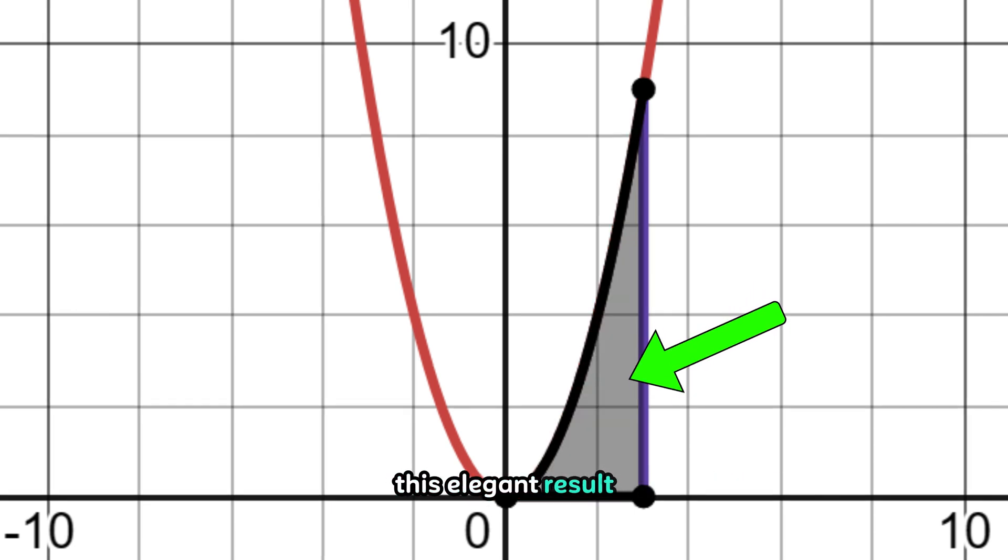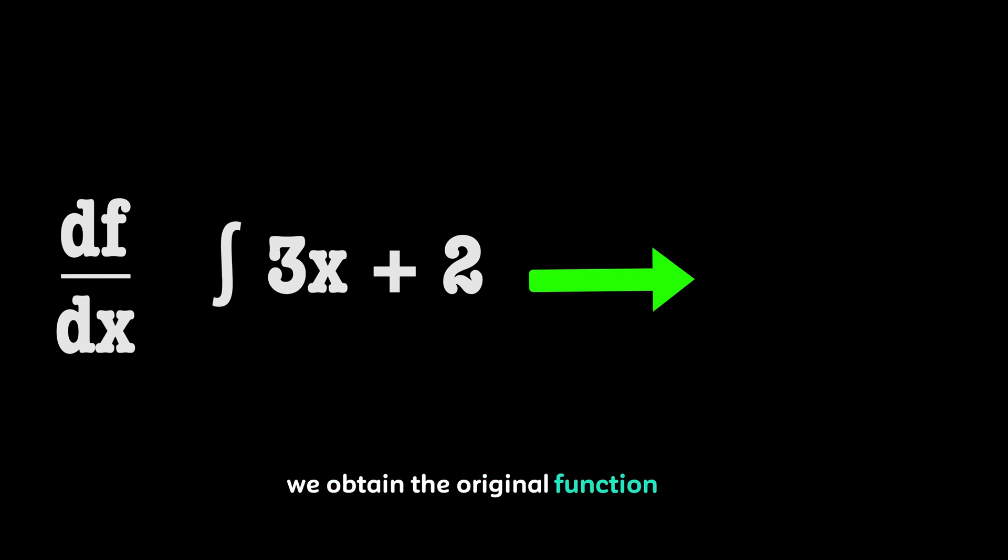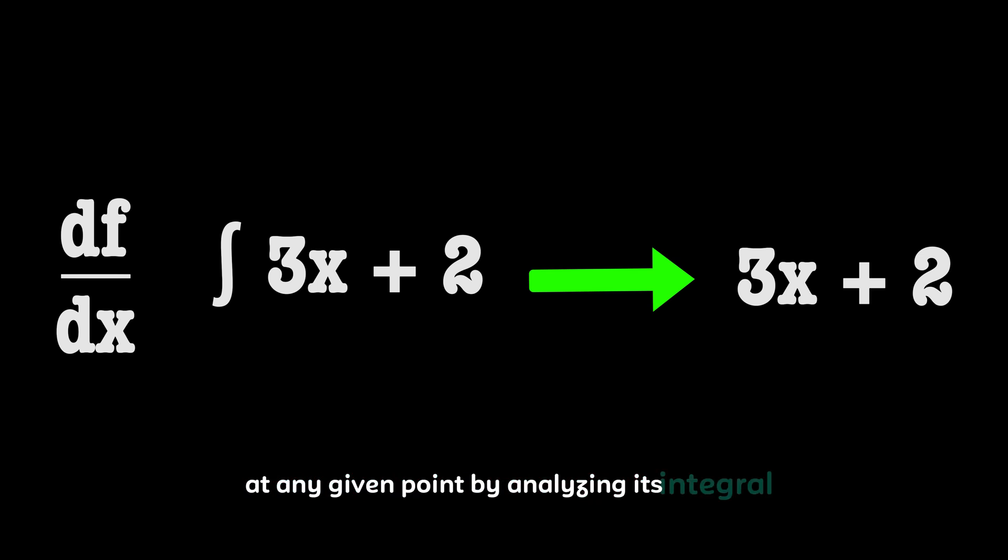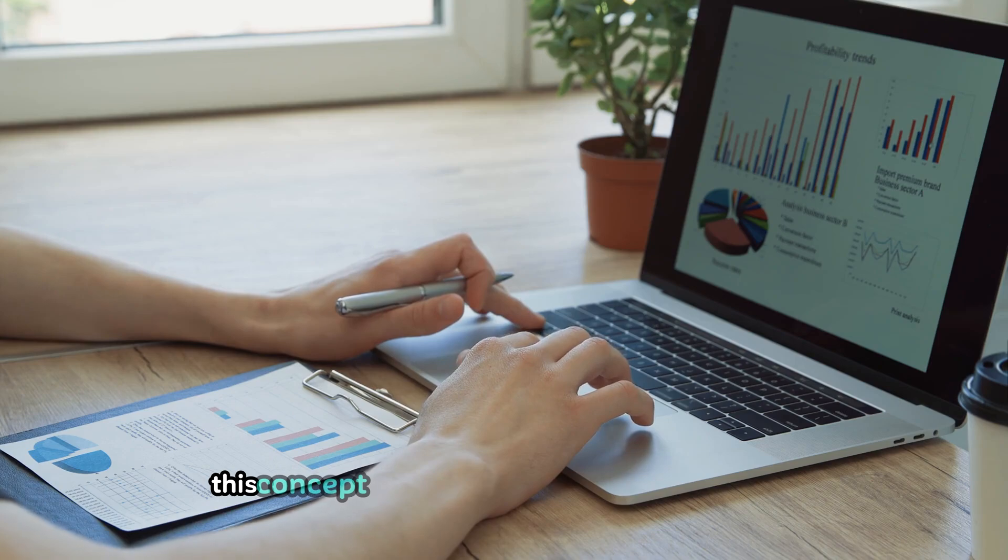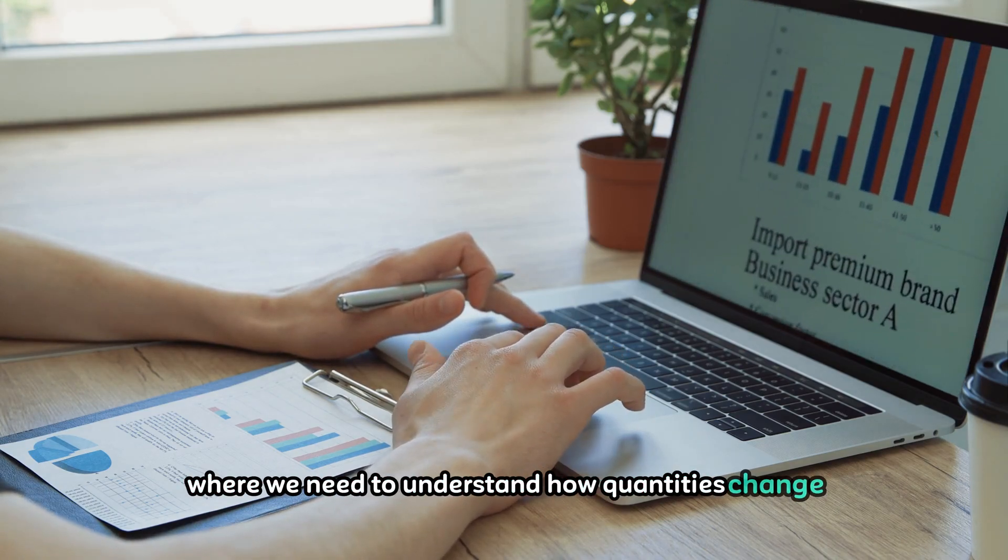This elegant result provides a powerful tool for computing areas, volumes, and other quantities of interest. Part 2 states that if we have a function defined by an integral and we take its derivative, we obtain the original function back. In essence, part 2 tells us that differentiation undoes integration. It allows us to find the rate of change or slope of a curve at any given point by analyzing its integral.